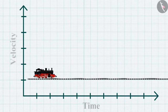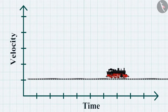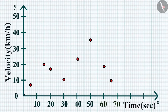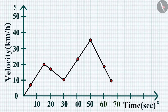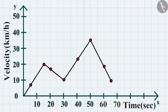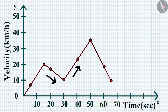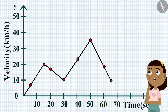Similarly, we can plot the velocity-time graph of a non-uniformly accelerated train. The velocity-time graph for non-uniformly accelerated motion can have any shape. In this graph, the current velocity of the train can be less than or greater than its previous velocity, showing that the motion is non-uniformly accelerated. We can also determine the acceleration of an object by calculating the slope of its velocity-time graph.